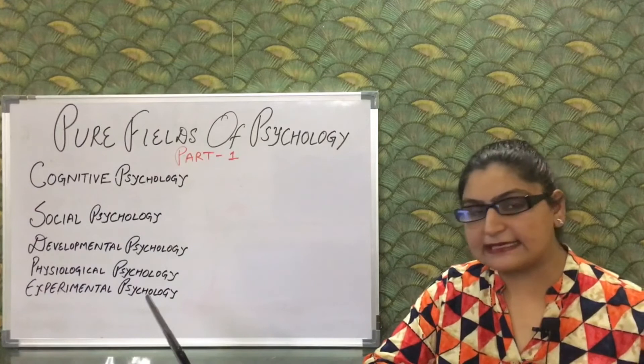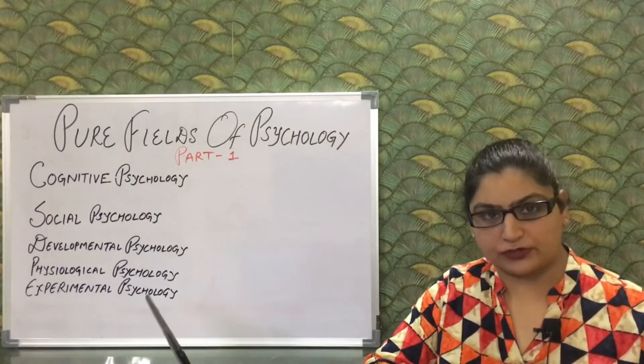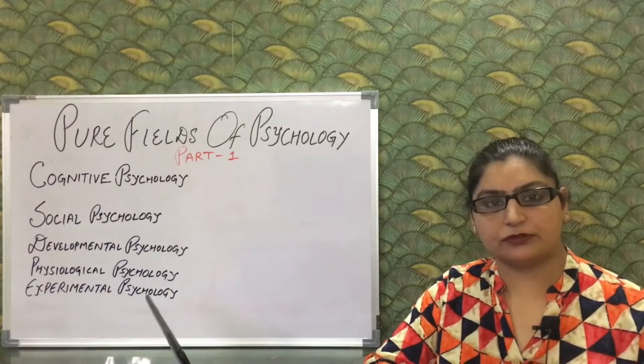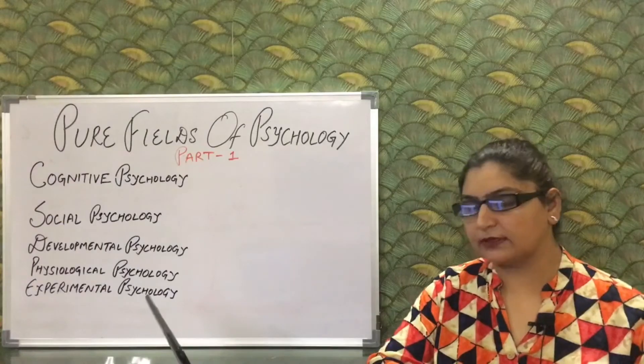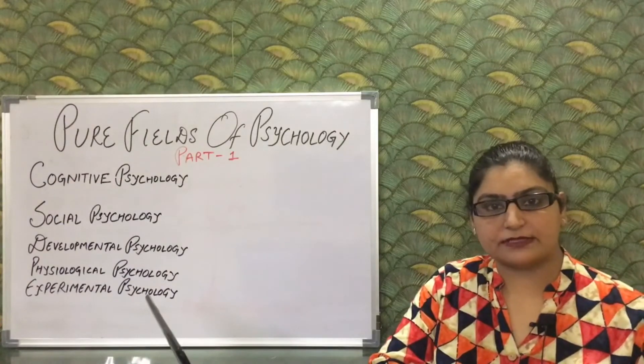Next is physiological psychology. Its definition: it is the study of human behavior through physiological impact. It deals with how the human mind affects our behavior. It is concerned with how physiology, genetics, and biology affect emotional responses, memory, mental illness, state of consciousness, and sensory perception.